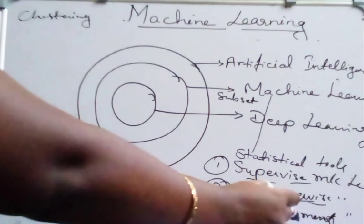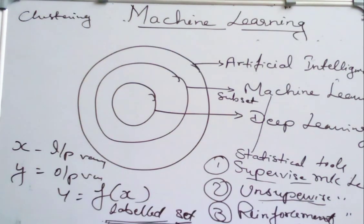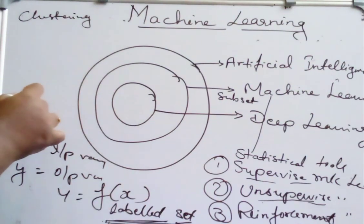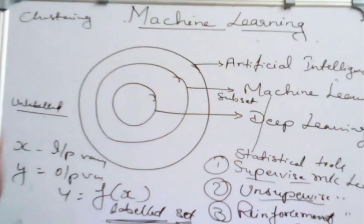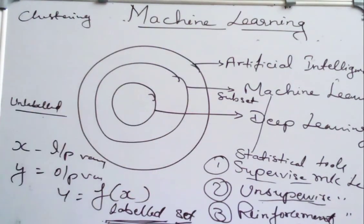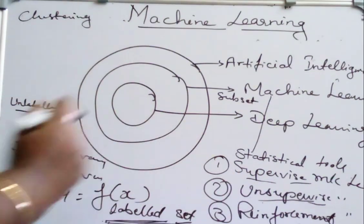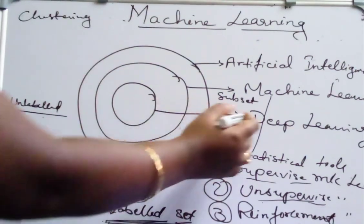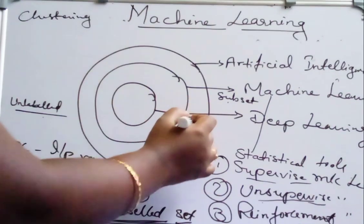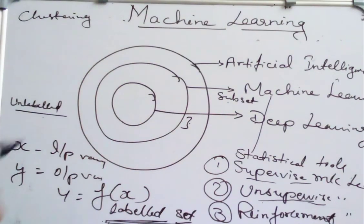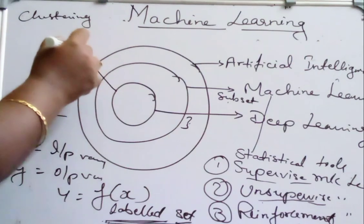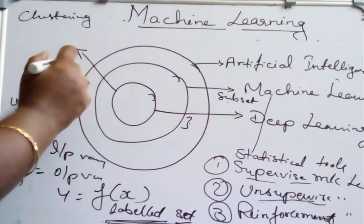The third type of learning is called reinforcement learning. In reinforcement learning, some part of the data is labeled and some part is unlabeled, so we can call it semi-supervised machine learning. Such kinds of applications fall under reinforcement learning. Deep learning is a subset of machine learning and is used to mimic the human brain to learn the model.